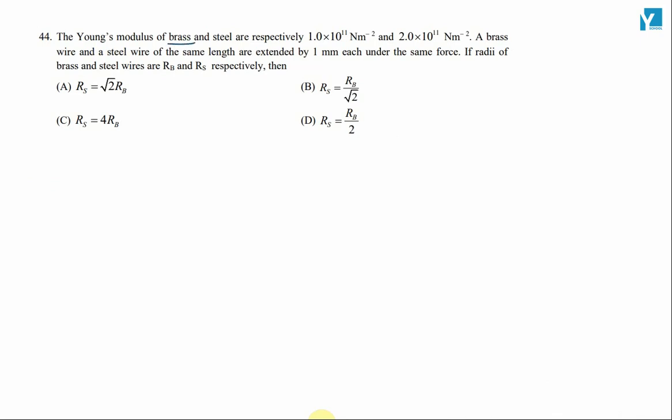The Young's modulus of brass and steel are respectively 1.0 into 10 raised to 11 Newton per meter square and 2.0 into 10 raised to 11 Newton per meter square. A brass wire and a steel wire of same length are extended by 1 mm each under the same force. The radii of brass and steel wires are Rb and Rs respectively.